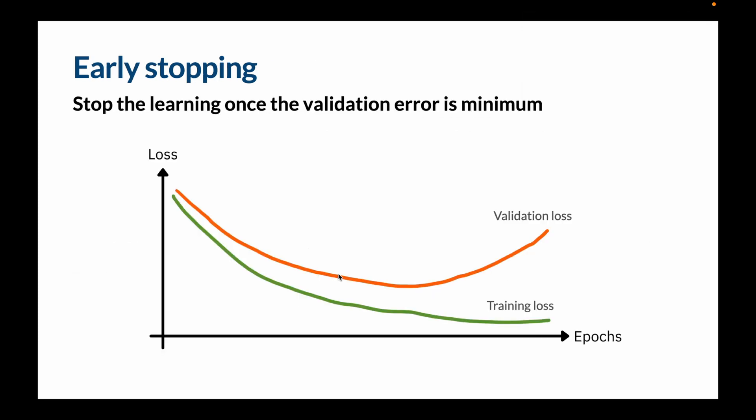And the next one we have is early stopping. We've seen this graph before. The more you train your network, the less the training loss is going to get. But after a while, validation loss is going to start getting higher. And as we said, that's the point we start overfitting. What you can do with early stopping is to stop it at that point and say, okay, after 30 epochs, my network starts overfitting. So I'm just going to stop the overfitting process.